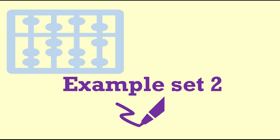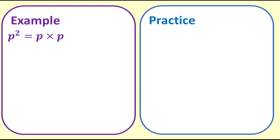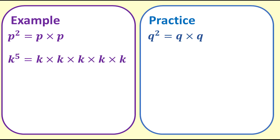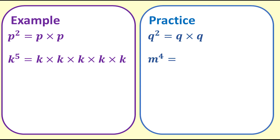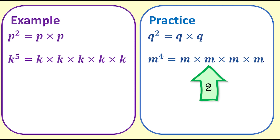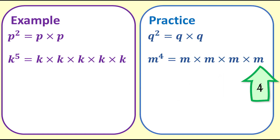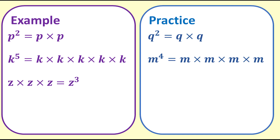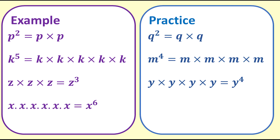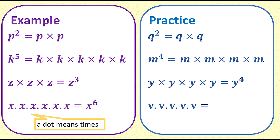Example set 2: Using letters or variables. p to the power of 2 equals p times p. q to the power of 2 is q times q. k to the power of 5 is k times k times k times k times k — in other words, k multiplied 5 times. m to the power of 4 is m times m times m times m — in other words, m multiplied 4 times. z times z times z is z to the power of 3. x·x·x·x·x·x·x is equivalent to x to the power of 6. If we used the times symbol along with the letter x it could be confusing. v·v·v·v·v·v is another way of writing v to the power of 5.